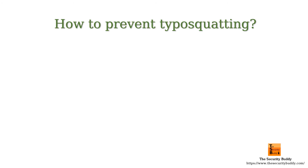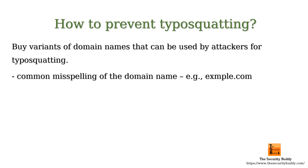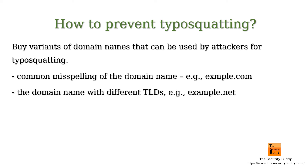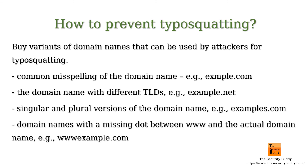How to prevent typosquatting? One possible defense is to buy variants of domain names that could be used by attackers. For example, if you own the domain name example.com, you may consider buying common misspellings of the domain name, the domain name with different TLDs, singular and plural versions, and domain names with a missing dot between www and the actual domain name.